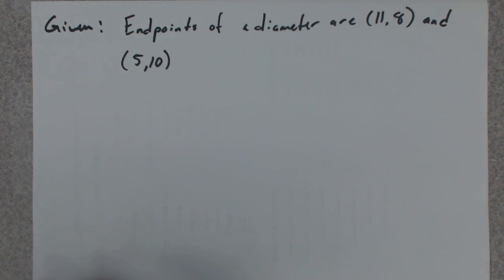In this question about circles, it's given that the endpoints of a diameter are found at (11,8) and (5,10). We're supposed to come up with the equation for this circle. So we're not given the center, and we're not given the radius. We're only given two points on the diameter.